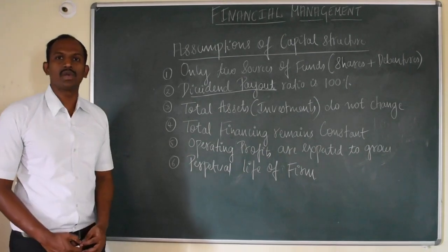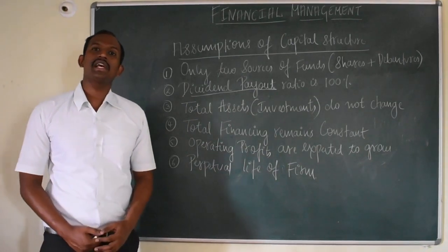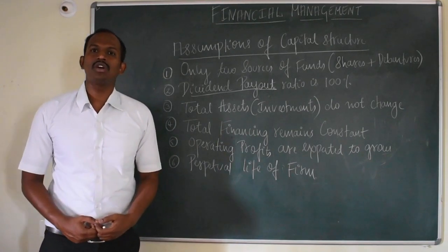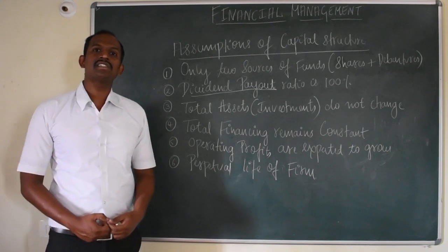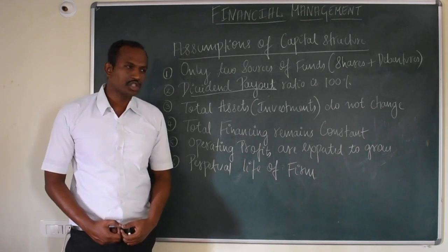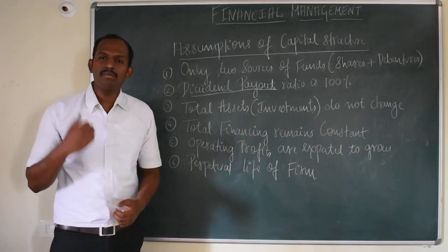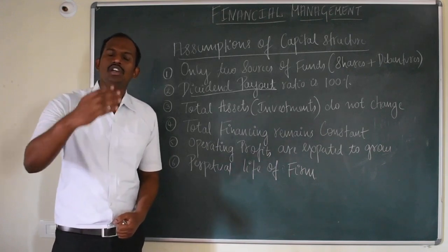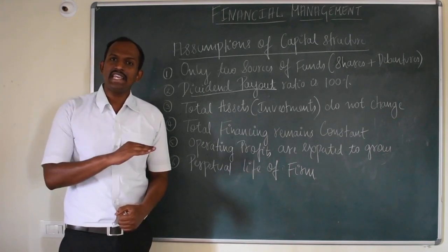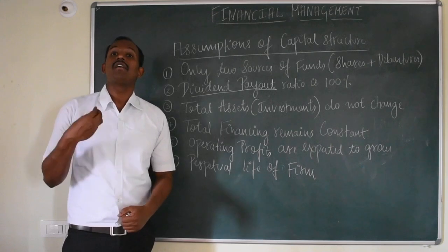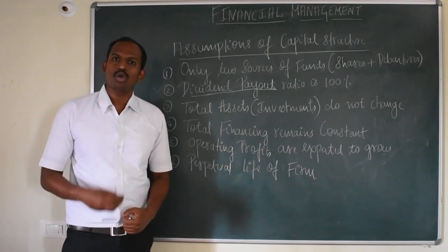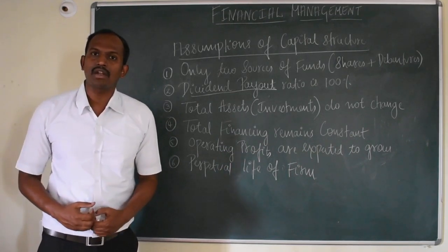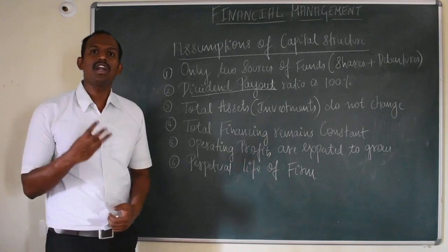Now let's discuss the assumptions of capital structure. The first assumption is that we have only two sources of funds — shares and debentures. The second assumption is that the dividend payout ratio is 100%, meaning the company will distribute all equity profits towards the shareholders and will not retain any as retained earnings. This has a positive impact on the market price of a share.